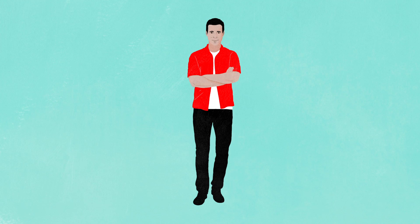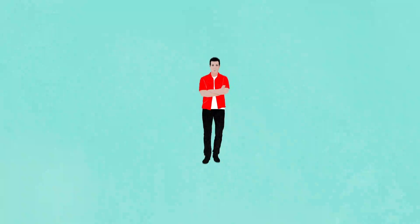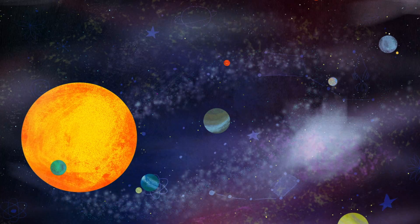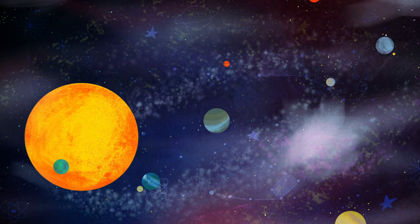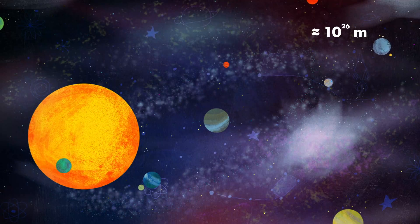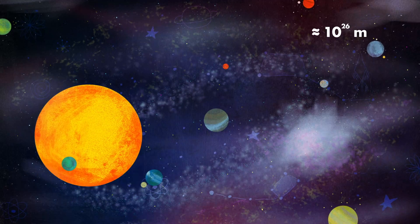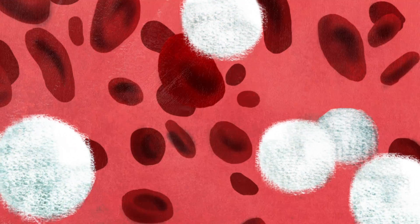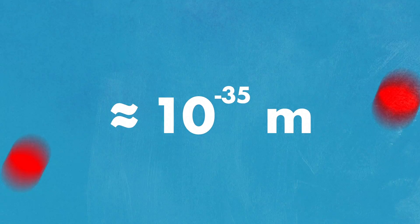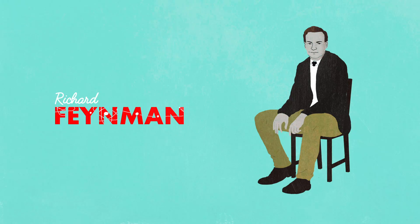To get a sense of the extent to which that's true, the observable universe is 26 orders of magnitude larger than a human body. That means if you zoomed out by a factor of 10, 26 times, you'd be at the scale of the universe. But to reach the minimum length scale, known as the Planck length, you would need to zoom in 35 times. As physicist Richard Feynman once said, there's plenty of room at the bottom.